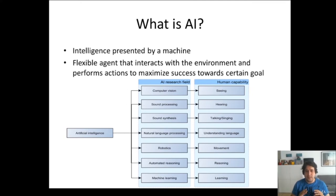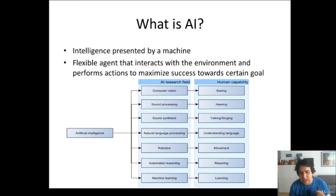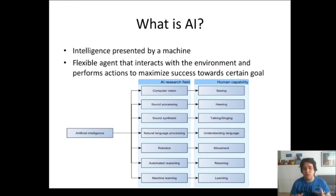The goals can be human capabilities such as seeing, hearing, talking, singing, understanding language, movement, reasoning, and learning. For each of those capabilities there is a field of research in artificial intelligence. For seeing we have computer vision, which was especially important in the past and many advances first implemented there were later used in other areas. For hearing there is sound processing as a research field. For talking and singing, there is sound synthesis. For understanding language, there is natural language processing.